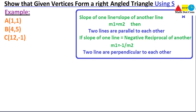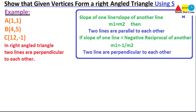We are going to use this property of slope on the given vertices to see whether they form a right angle triangle or not. In a right angle triangle, there are two lines that are perpendicular to each other, making an angle of 90 degrees.